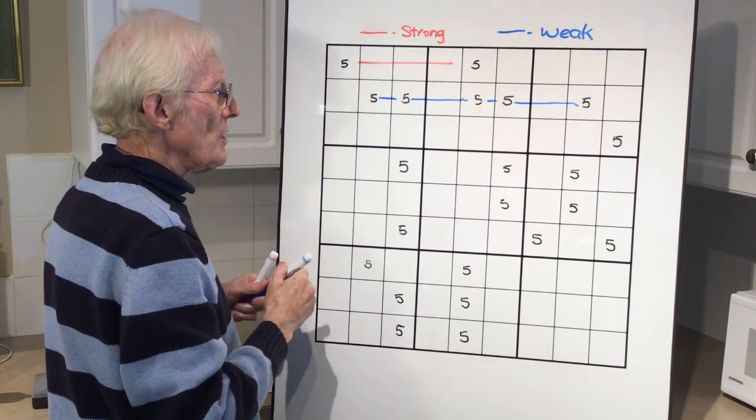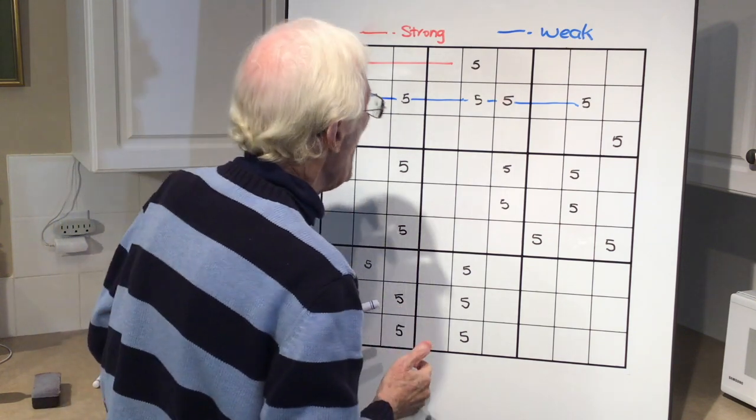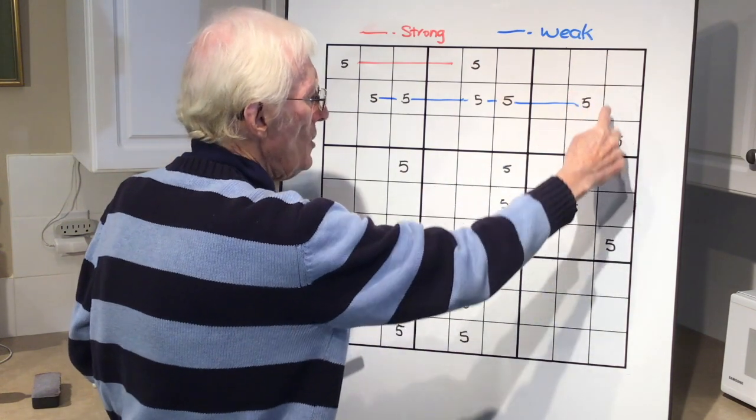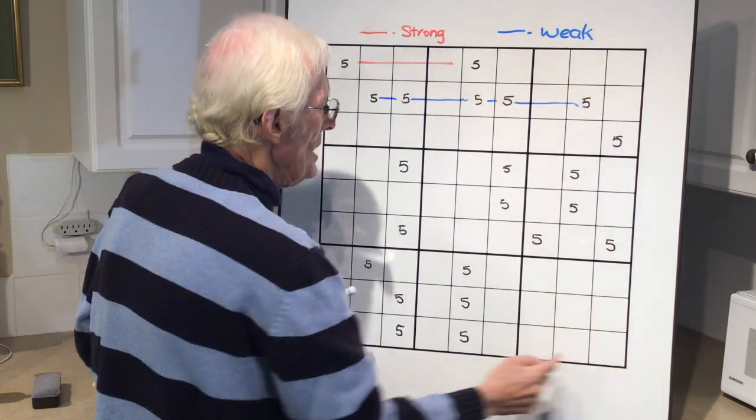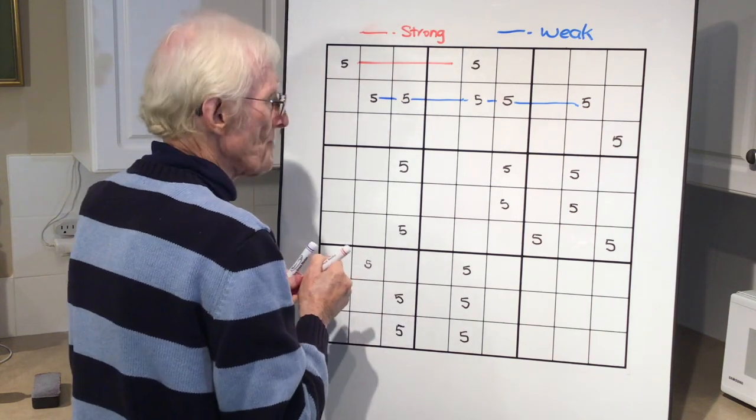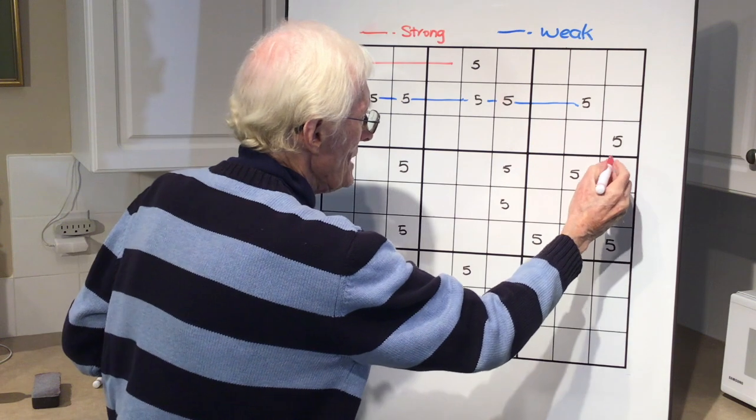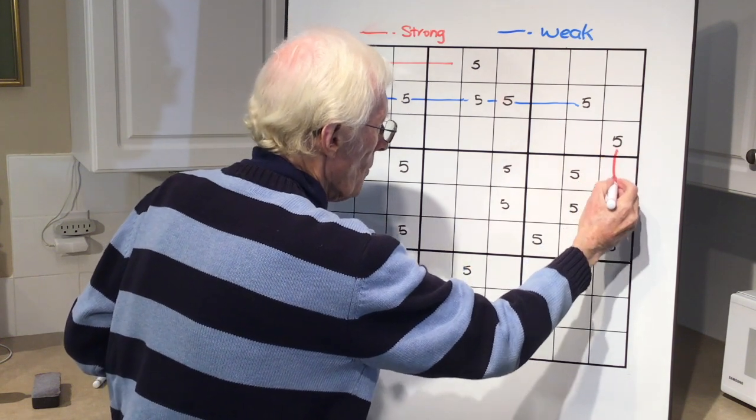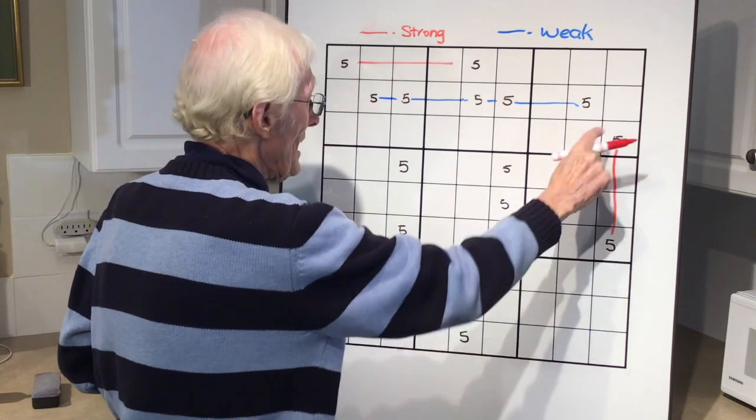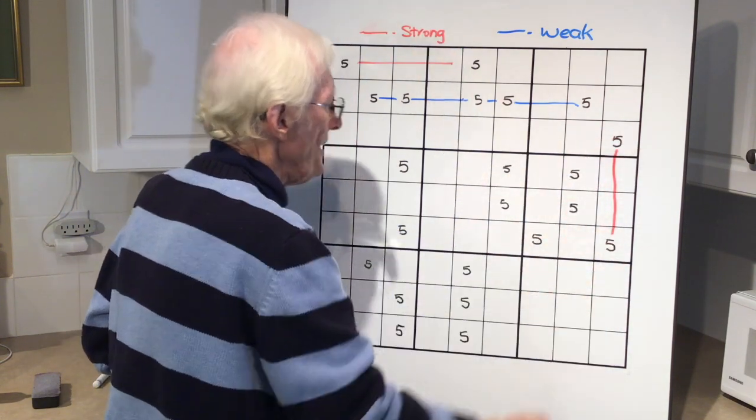Now let's look across here. Look at this five here and a five here. They are the only fives in that column, so that makes them a strong link. A strong link means that one is going to be true and one is going to be false. One is going to be accurate. We don't know which. It's not important right now.